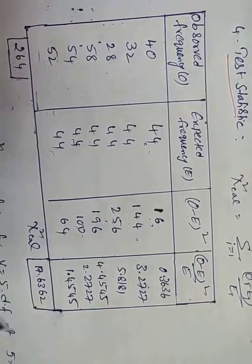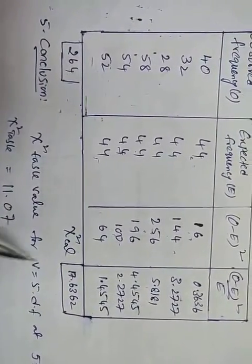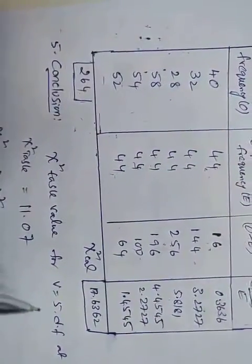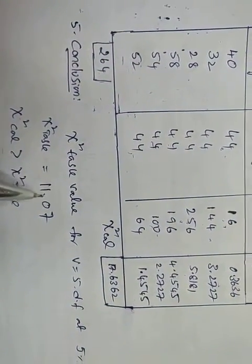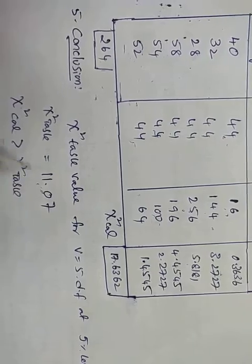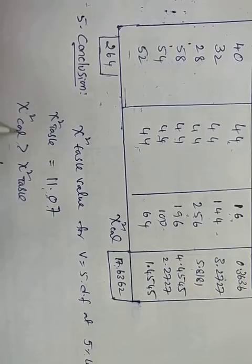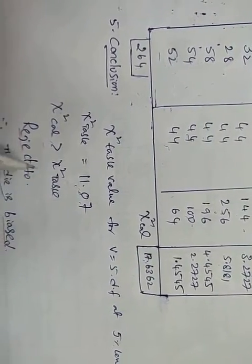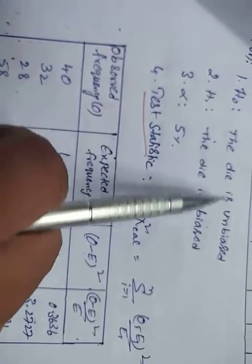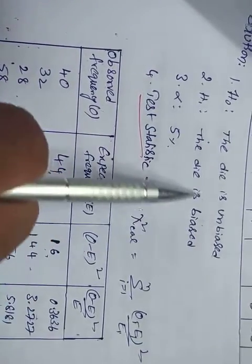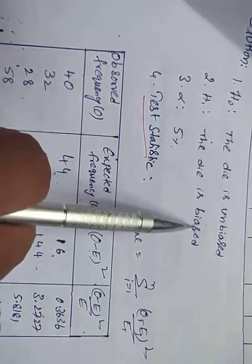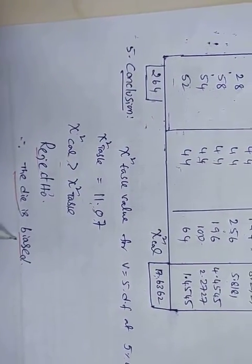The chi-square calculated value is compared to the chi-square table value of 11.07. Since chi-square calculated is greater than the chi-square table value, we reject H0. The null hypothesis that the die is unbiased is rejected, and H1 is accepted — the die is biased.